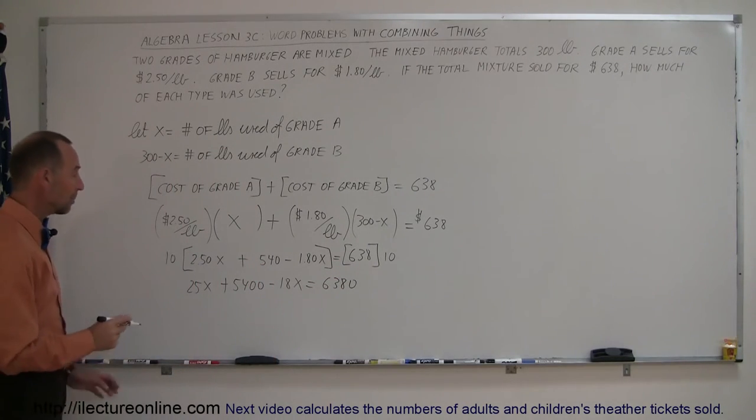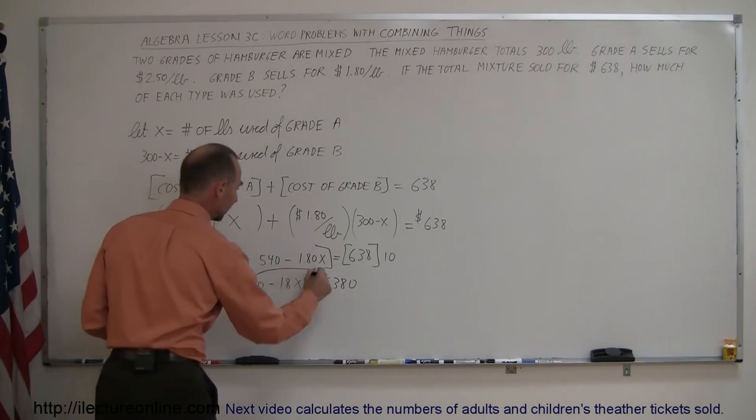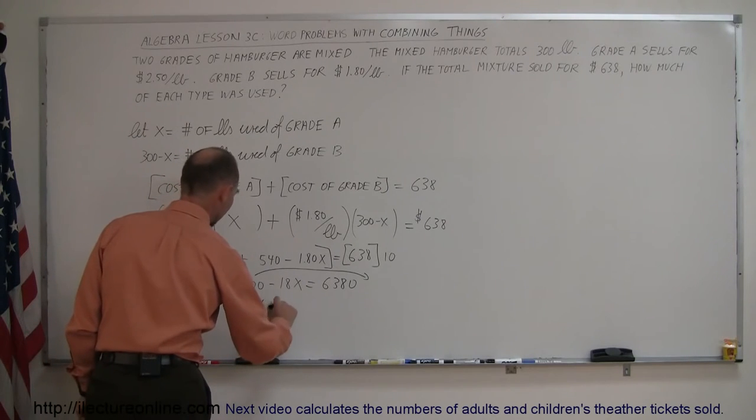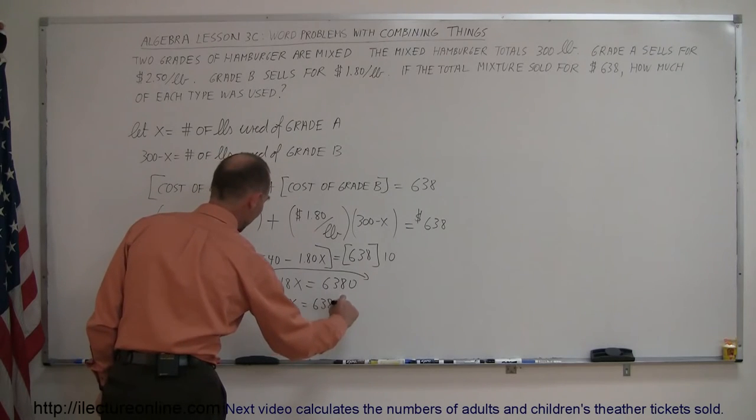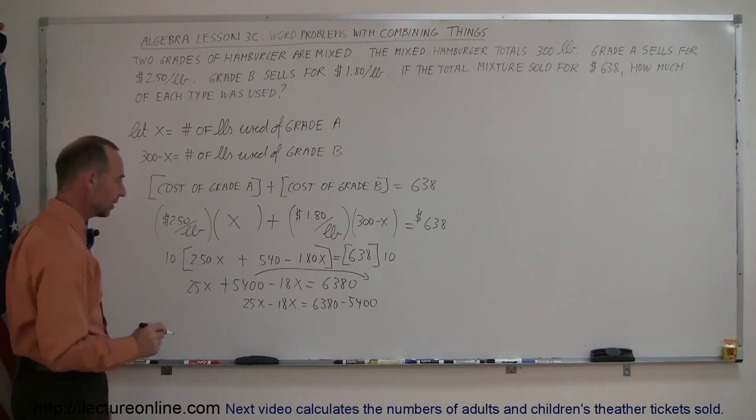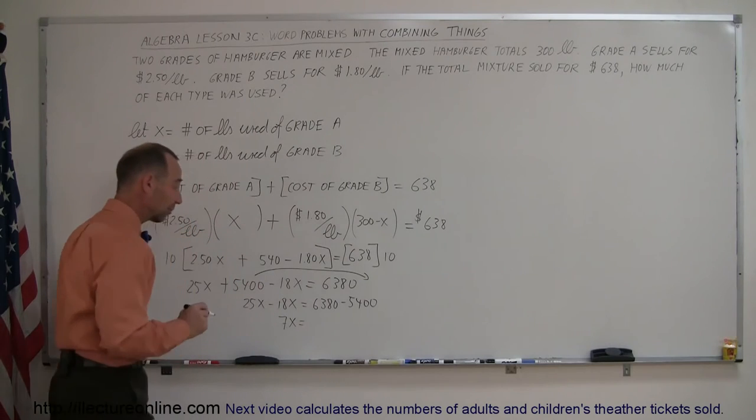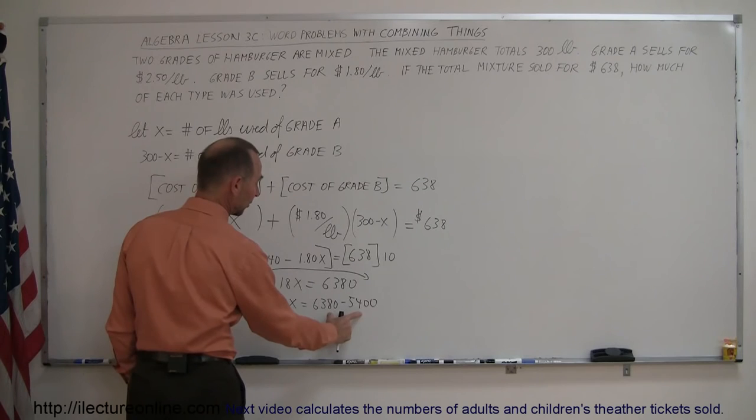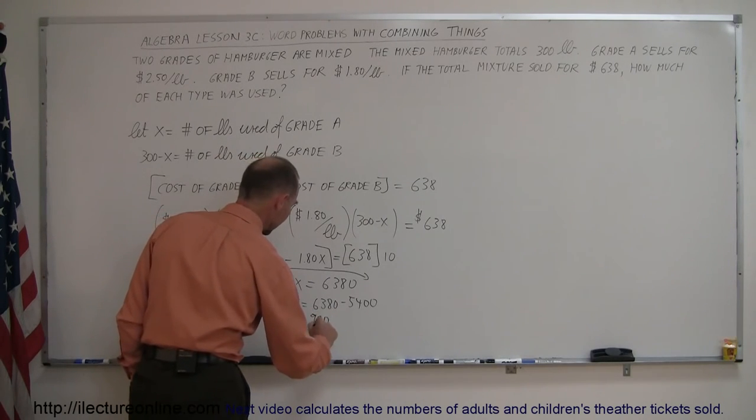Now we keep all the terms of the X on the left side of the equation, move all the terms that do not have an X to the right side of the equation. Here we get 25X minus 18X equals 6380 minus 5400. 25 minus 18 is 7X, and 6380 minus 5400. Well, if this was 6400, the difference would be 1000. If it's 20 less, that would be 980.